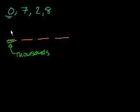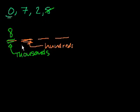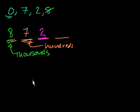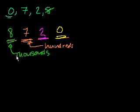The largest number out of these is 8, so we put that in the thousands place. Then in the hundreds place, we put the next highest number, which is 7 — because whatever number is here gets multiplied by 100. Then for the tens place, the next largest is 2. And we're left with 0 for the ones. So the largest number is 8,720. If we had switched those, we'd only have 7,800, which would be much smaller than 8,700.